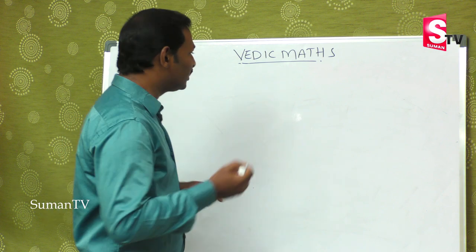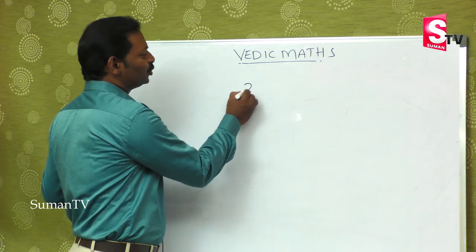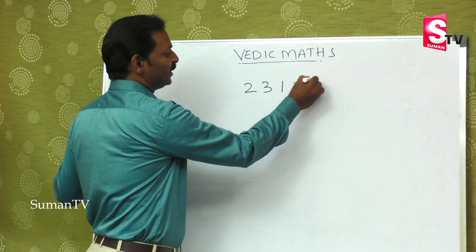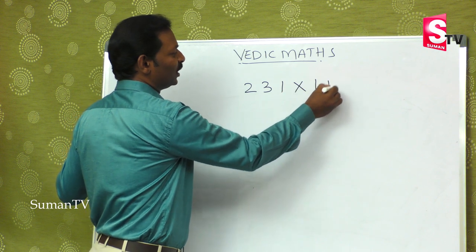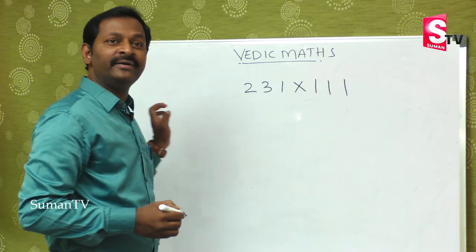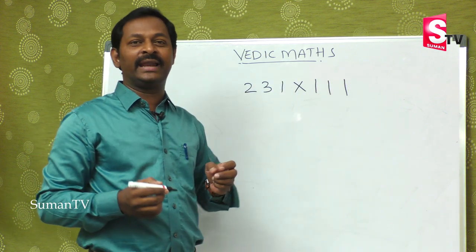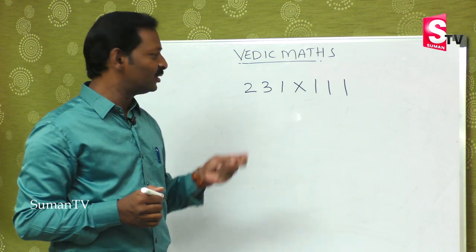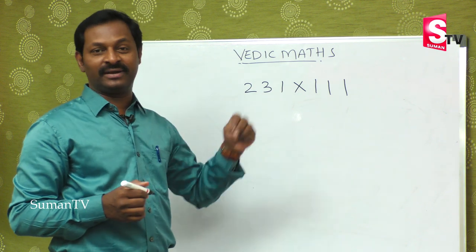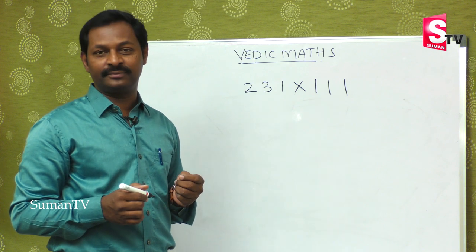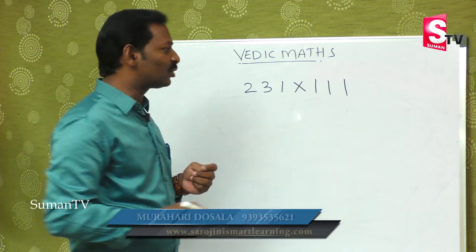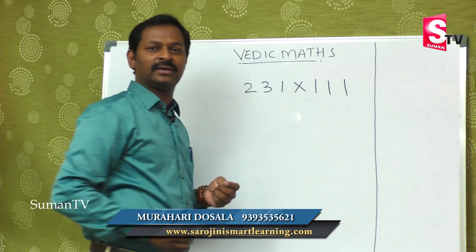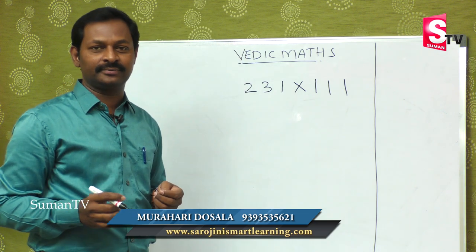This day, we will multiply by 111. This is a 3-digit number, so this is one concept. You can do it perfectly.